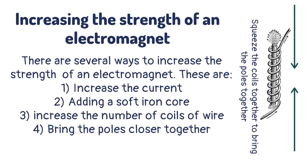There are several ways to increase the strength of an electromagnet. These are: increase the current, adding a soft iron core, increase the number of coils of wire, and bring the poles closer together.